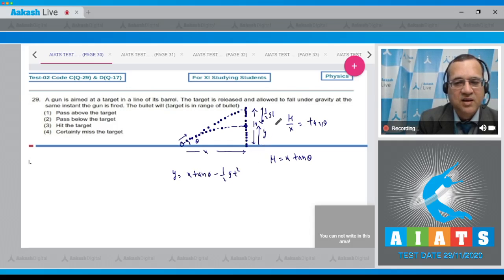From here, the projectile as it reaches this point is down by half gt squared, whereas this target particle in t seconds is also at the same point because free fall - the distance is half gt squared. So it will hit the target. Option is hit the target. Answer is 3 to this question.